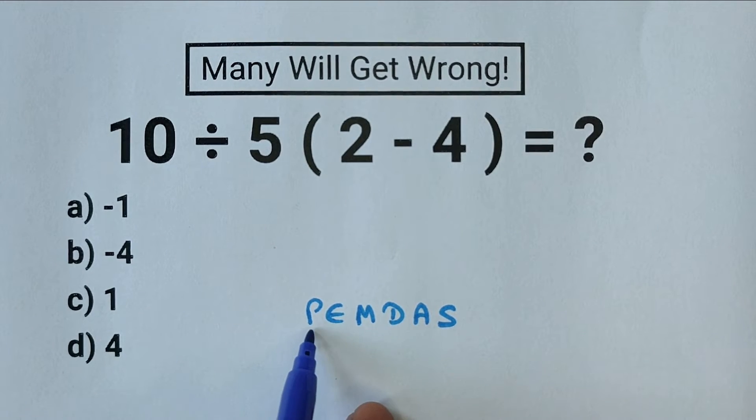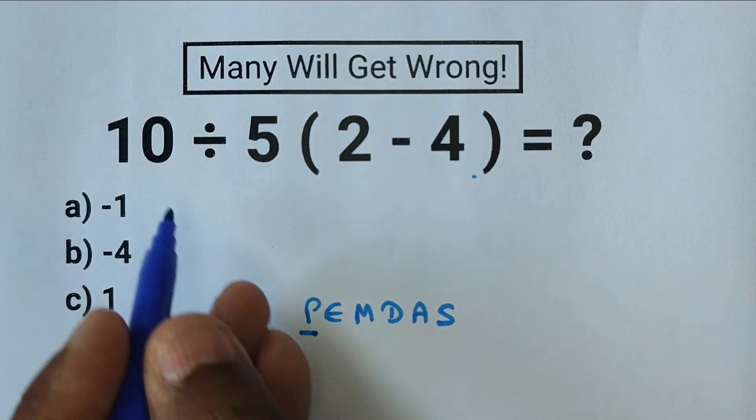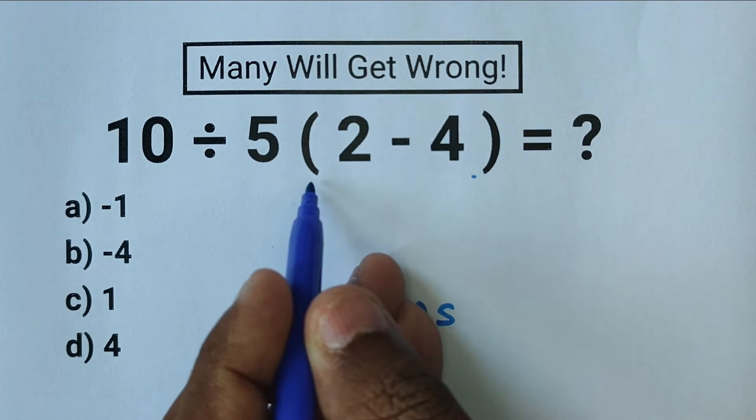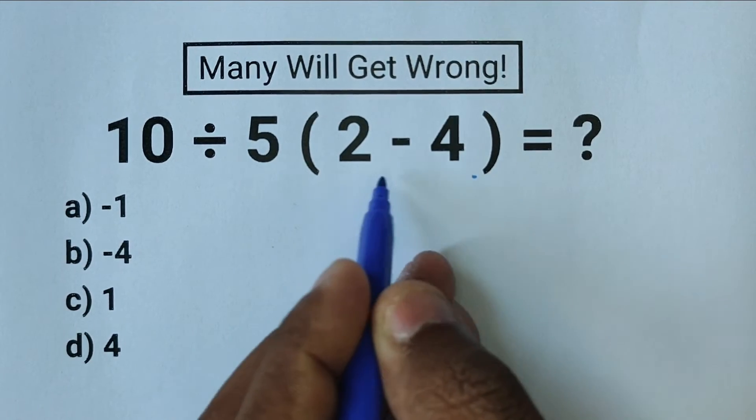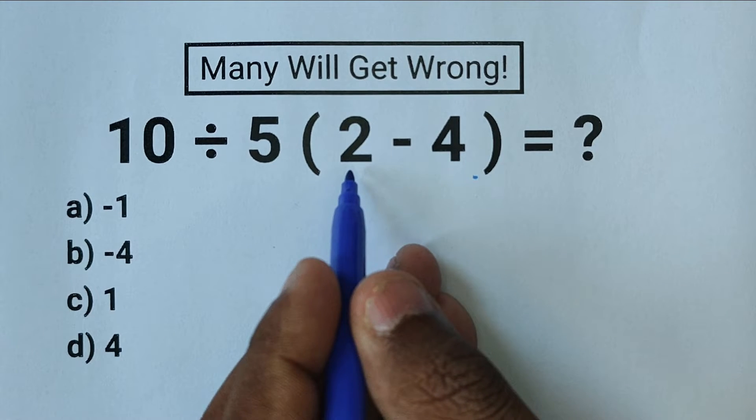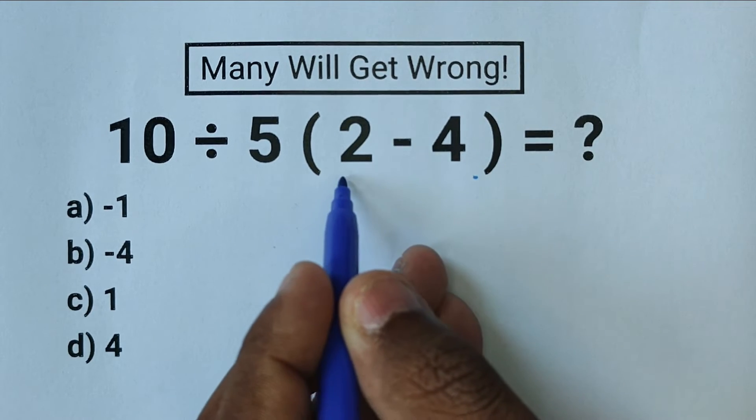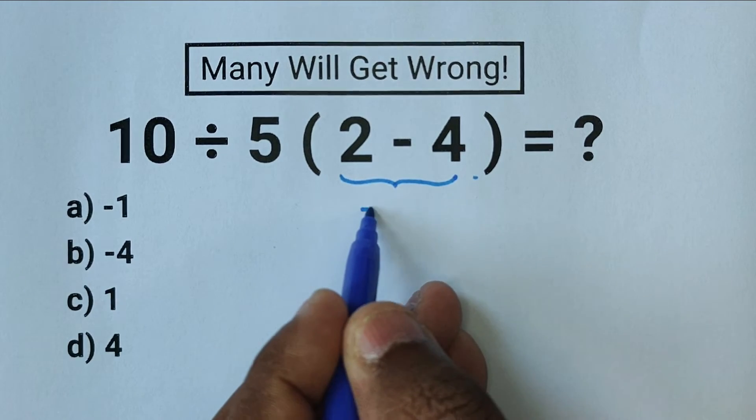Okay, let's go through PEMDAS. First we have P, parenthesis. Do we have any parenthesis in this problem? Yes. So we have to do what's inside the parenthesis first. Here we have 2 minus 4, which equals minus 2.